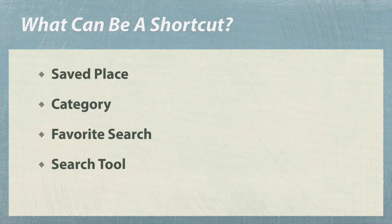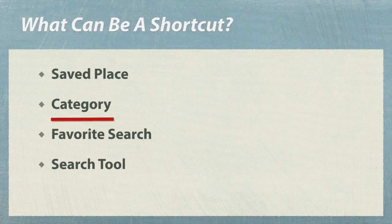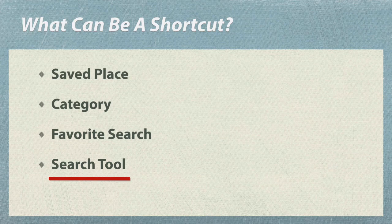These are the things that can be shortcuts: any place that you have previously saved, any point of interest category, any search such as a business type or a chain of businesses, and any available search tool.